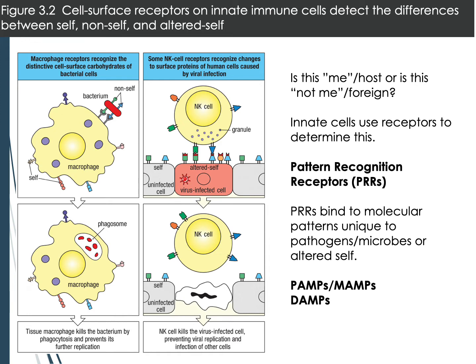DAMPs are damage-associated molecular patterns, found on what we call altered self — a cell that has aged, is dying, or has been damaged by some exposure or infection. For example, a paper cut creates damaged cells that begin expressing DAMPs. Innate cells can bind those DAMPs through their pattern recognition receptors and know to eliminate those cells. Natural killer cells are particularly good at recognizing altered self, whether due to viral infection or damage, and play an important role in clearing dead and damaged cells.